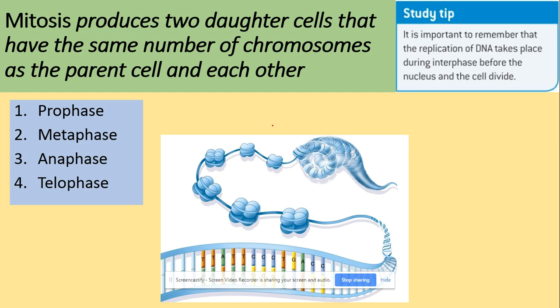In mitosis, two daughter cells are produced which have the same number of chromosomes as the parent cell. The four stages of mitosis are prophase, metaphase, anaphase and telophase. Remember that interphase is not a stage of mitosis — it is a part of the cell cycle.